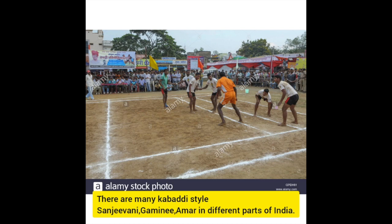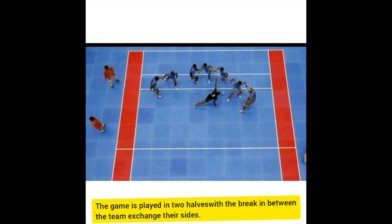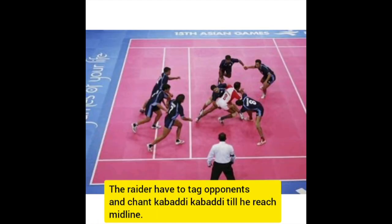Now we will summarize how to play kabaddi. In kabaddi, two teams of seven members each face each other in a flat rectangular court divided by a midline. The game is usually played in two halves with a half-time break in between. After the break, the teams exchange their sides in the court.